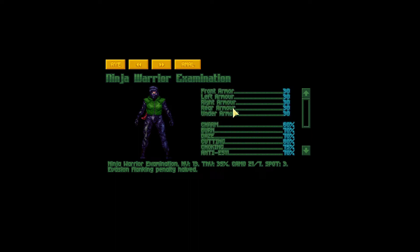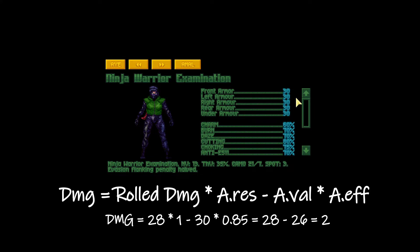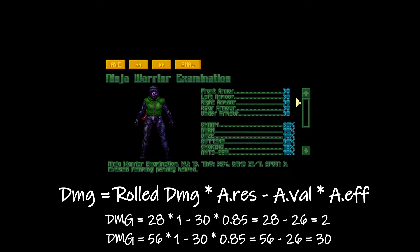Let's take two cases. The first one is where our homefront rifle rolled 28 damage, and the second one is where it rolled 56 damage. In the first case, after modifying the ninja warrior's armor by the weapon's armor effectiveness, we get 28 minus 26, so the damage applied to health would be only 2. In the second case when we rolled 56, the damage applied to the health of the ninja warrior would be 30.